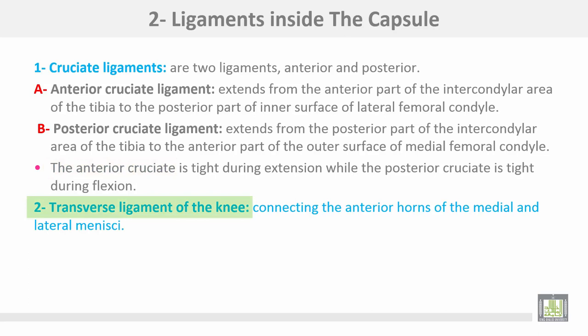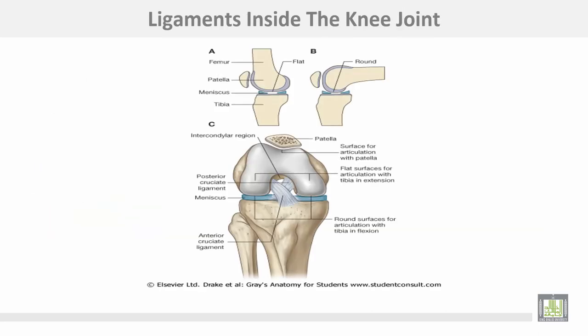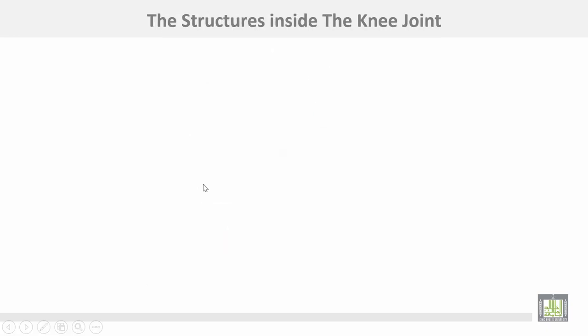The transverse ligament of the knee connects the anterior horn of the medial and lateral menisci. Here are the ligaments inside the knee — this is the anterior cruciate ligament and this is the posterior cruciate ligament.